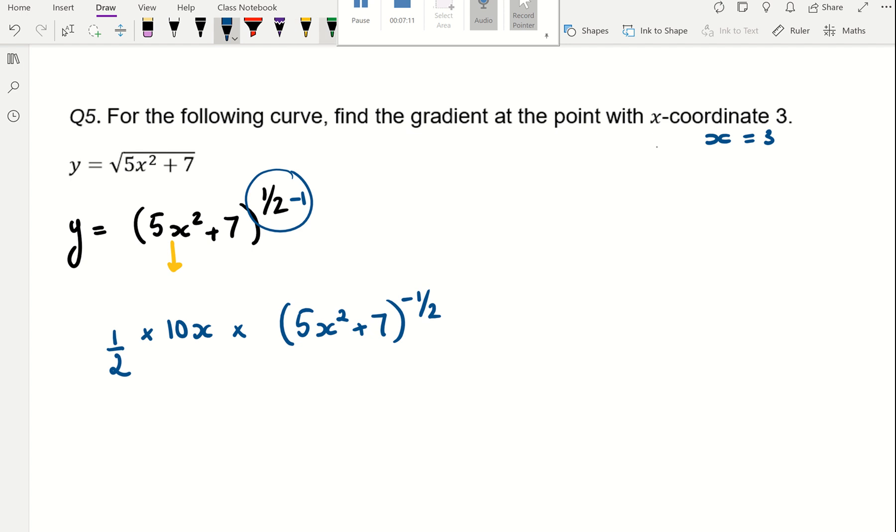A half times 10 gives us 5. So this is 5x times the bracket, 5x squared plus 7 to the power of negative a half. And that is your dy over dx.